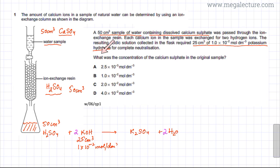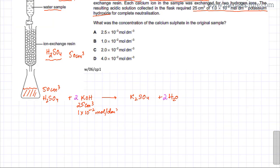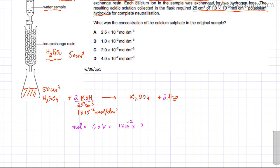The question asks us to calculate the concentration of calcium sulphate in the original sample. We already know the volume is 50 cm³. The first step is to find the moles of KOH using moles = concentration × volume: 1×10⁻² × (25/1000) = 0.0025 moles of KOH.